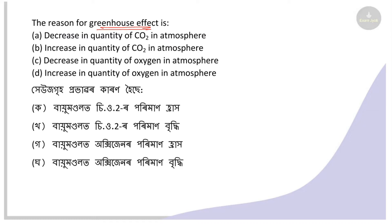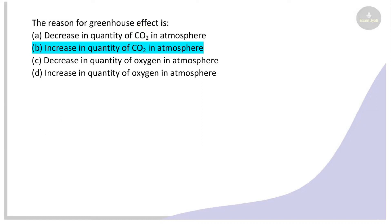Next question: What is the reason for the greenhouse effect? The options are: decreasing quantity of carbon dioxide in atmosphere, increasing quantity of carbon dioxide in atmosphere, decreasing quantity of oxygen, or increasing quantity of oxygen. The right answer is increasing quantity of carbon dioxide in atmosphere.